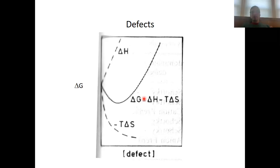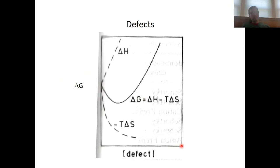Therefore, let us look more closely at defects in crystal structures and see how they influence ionic conductivity. Here you see the delta G of a structure as a function of defect concentration. A defect tends to be a high-energy site, and therefore the enthalpy of a crystal structure increases linearly with the number of defects.